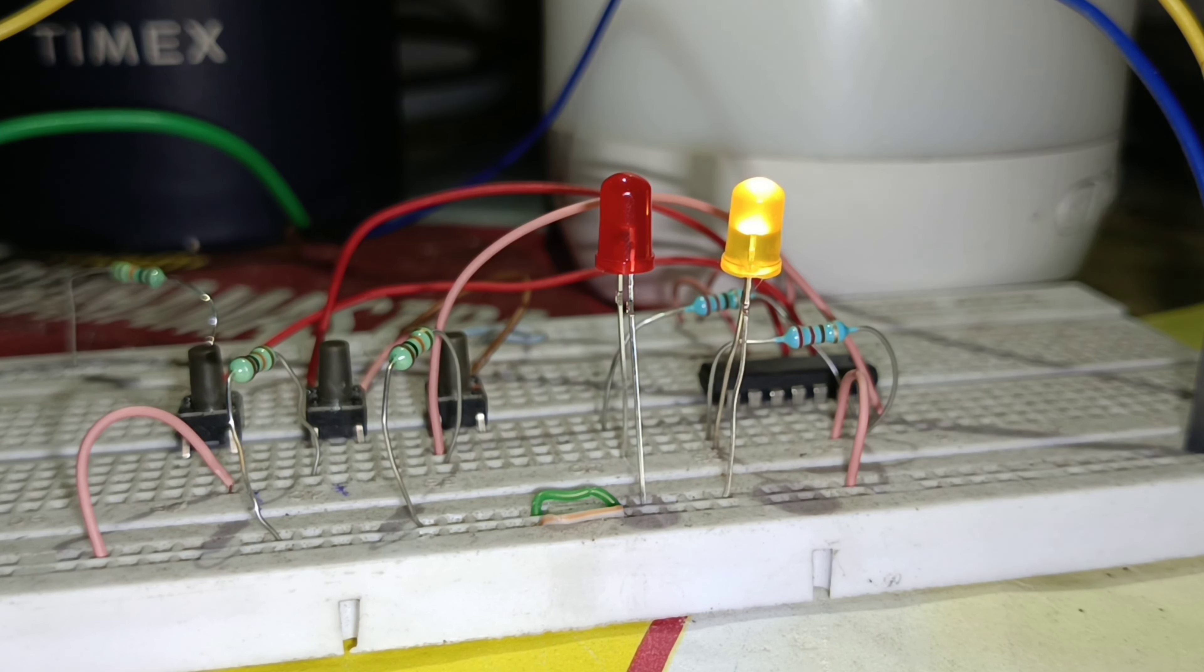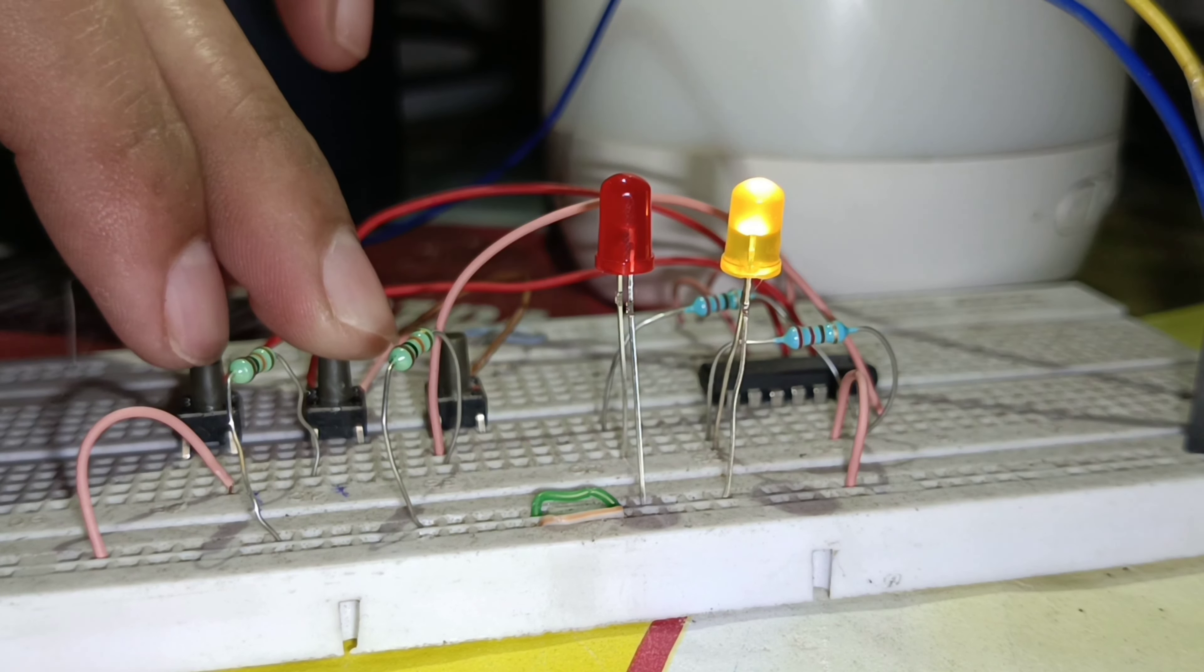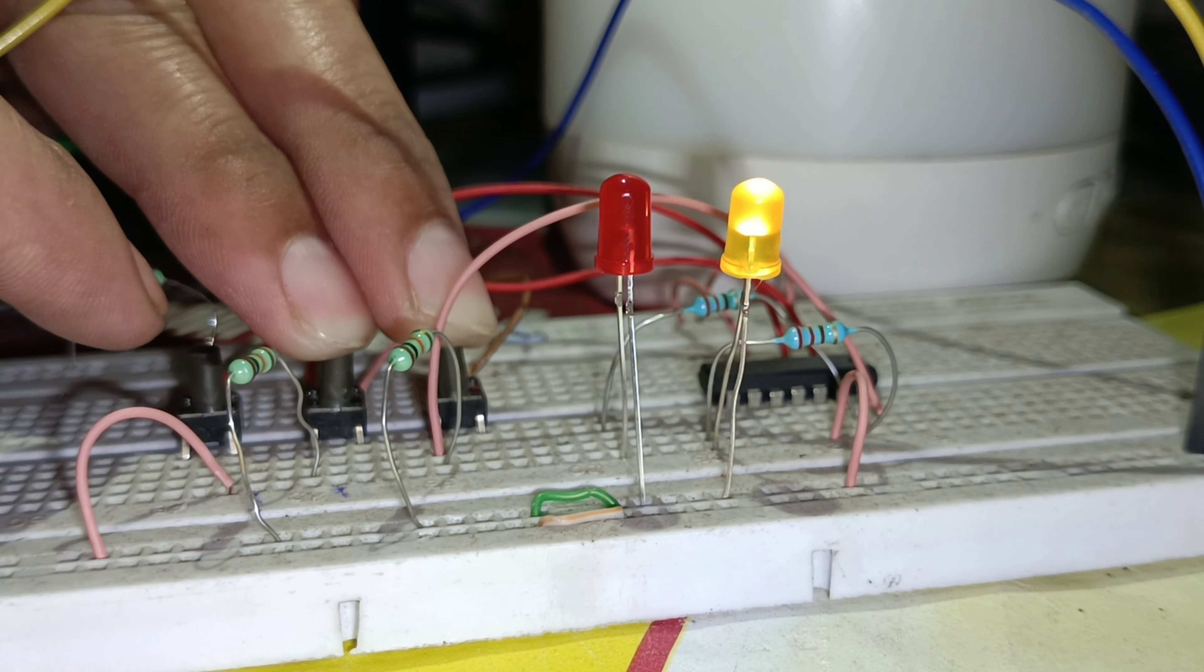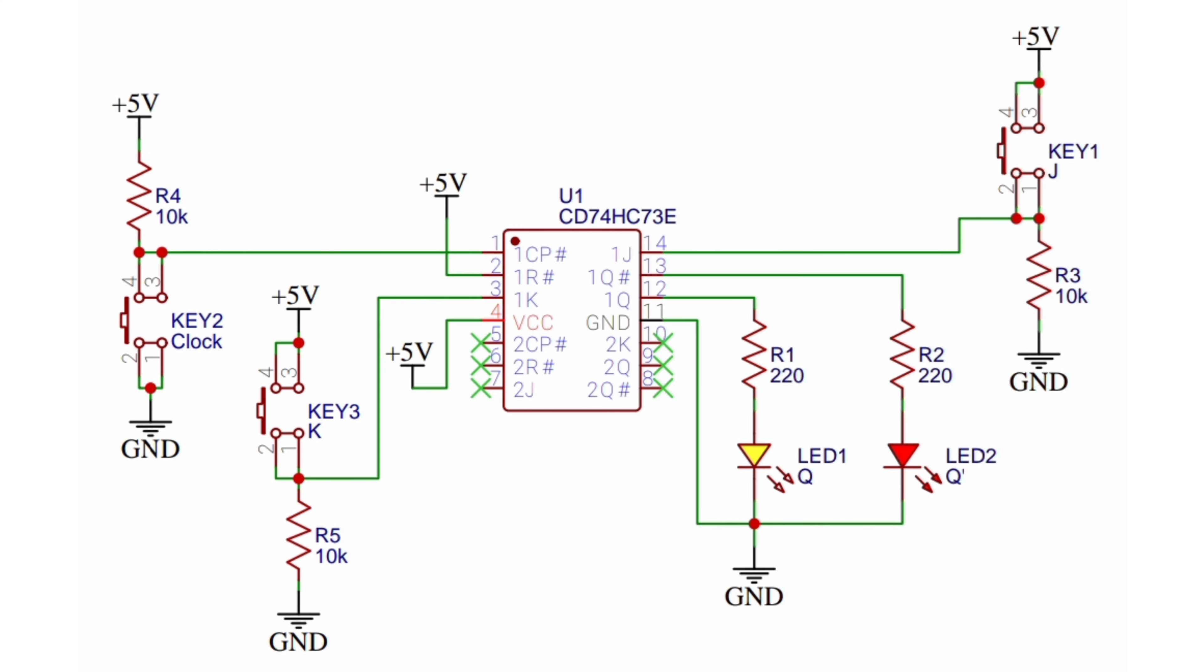Hello friends, welcome to Secret of Electronics. In this video we will learn how to use the CD74HC73 dual JK flip-flop IC and how it works. In this circuit you can see that the CD74HC73 IC has two JK flip-flops.